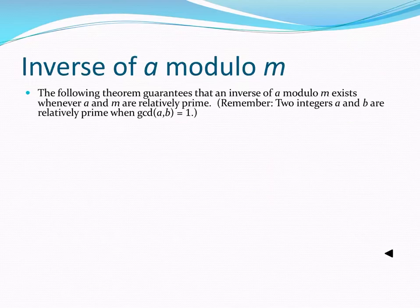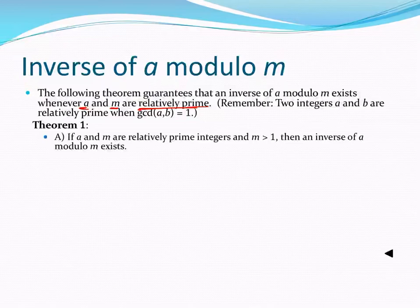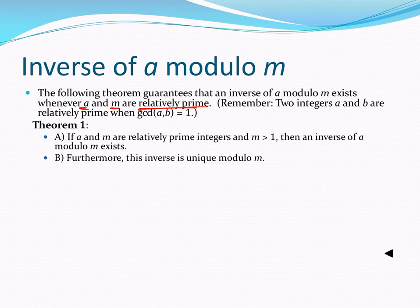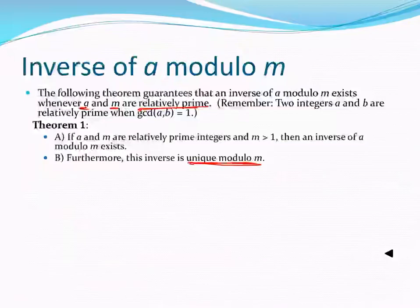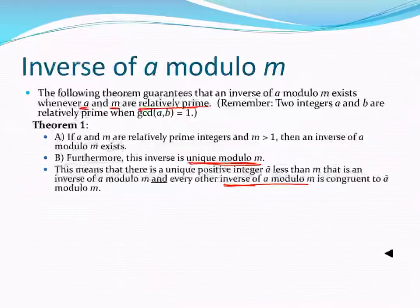This theorem guarantees that we have an inverse of A whenever A and M are relatively prime. If A and M are relatively prime, then an inverse of A exists, and it is unique modulo M. In other words, there is only one value between 0 and M minus 1 that is the inverse. All other inverses of A will be congruent to that unique inverse that is positive and less than M.